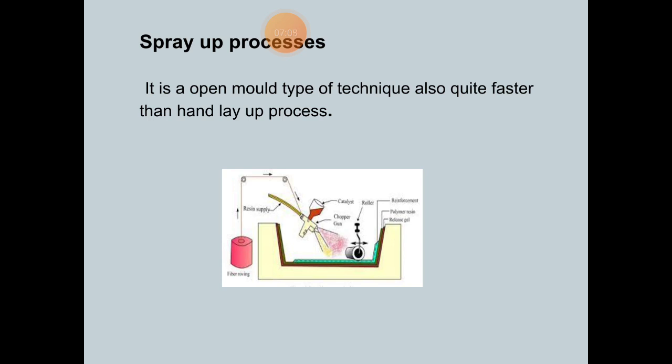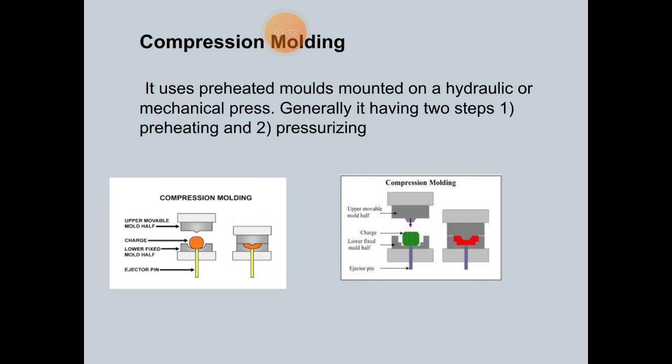Turn to the next process which is compression molding. It uses preheated molds mounted on a hydraulic or mechanical press. A prepreg is placed in between the two halves of the mold which are then placed against each other to get a desired shape of the mold.